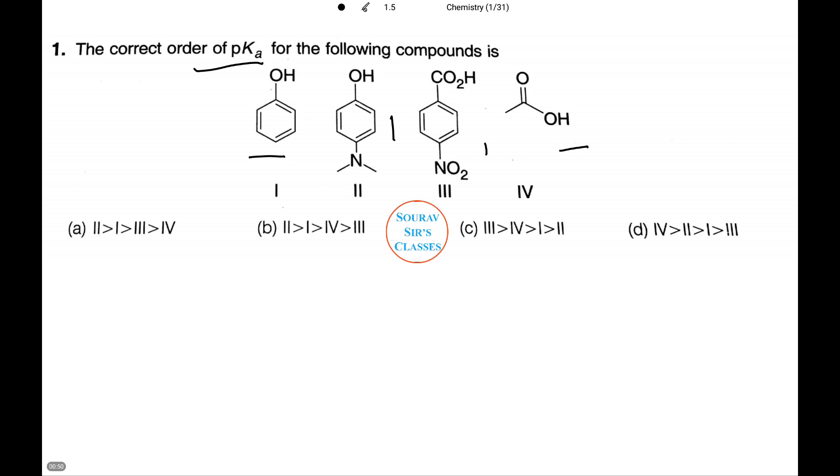Sorry, the fourth one is acetic acid and the third one is 4-nitrobenzoic acid. Now let's find the pKa value for all these four compounds.